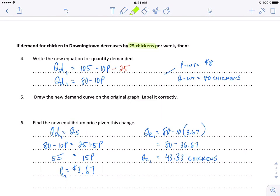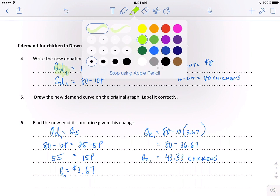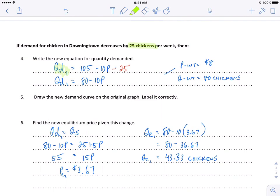For question number four we are now decreasing the demand for chickens in Downingtown by 25 chickens per week. So to do that you take the original demand equation, quantity demanded equation, and you subtract 25 units of chickens. So you can see I've noted that in red and for notation purposes it's also Qd1 instead of just Qd. It makes it a little bit easier to follow the practice of putting those subscripts for noting on the curves later.